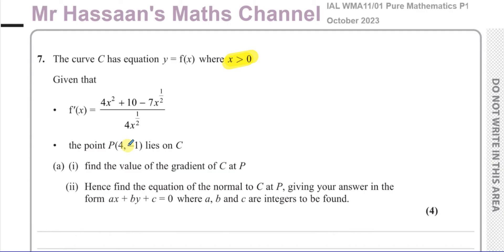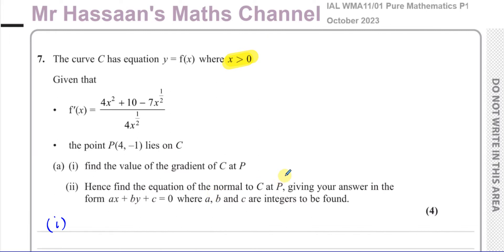They've told us that the point (4, −1) lies on the curve. We've got to first find the value of the gradient of c at P — the gradient of the curve at c — and then, using that answer, find the equation of the normal to c at P, giving your answer in the form ax plus by plus c equals 0, where a, b, and c are integers.